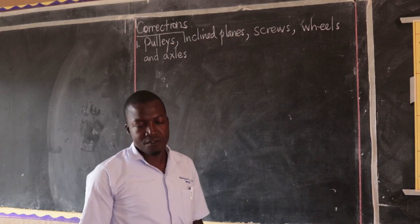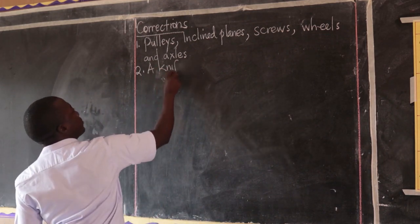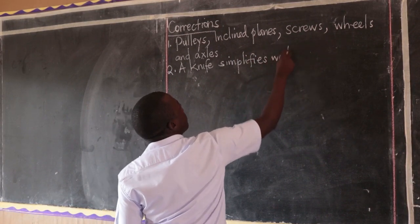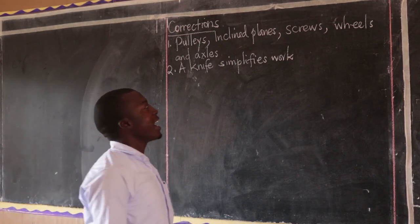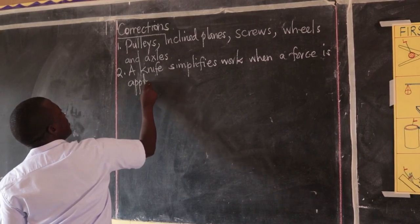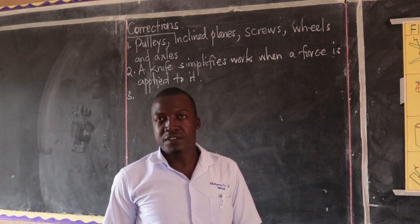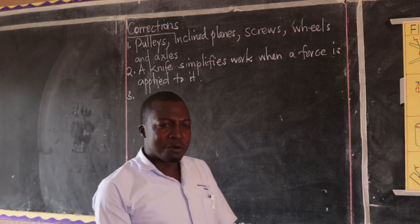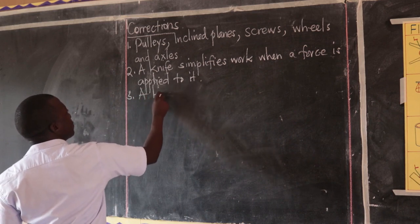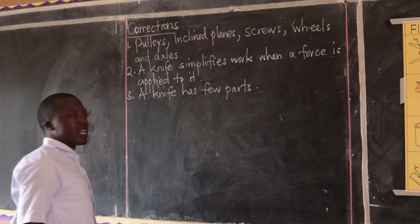Question two: why is a knife called a machine? We have to begin by saying that a knife simplifies work. You can also add that a knife simplifies work when a force is applied to it. The third question was: give a reason why a knife is called a simple machine. These two questions look the same but they demand different answers. That's why here, a knife has few parts.